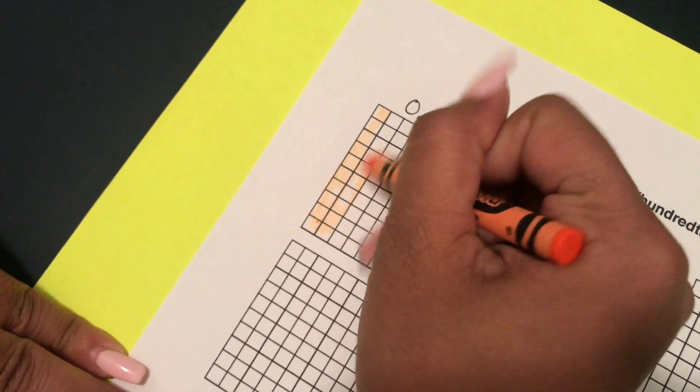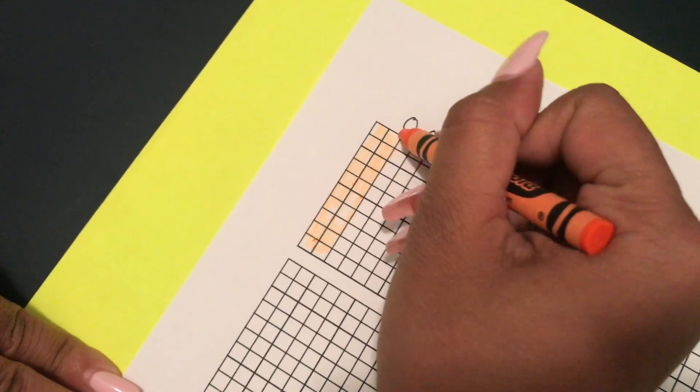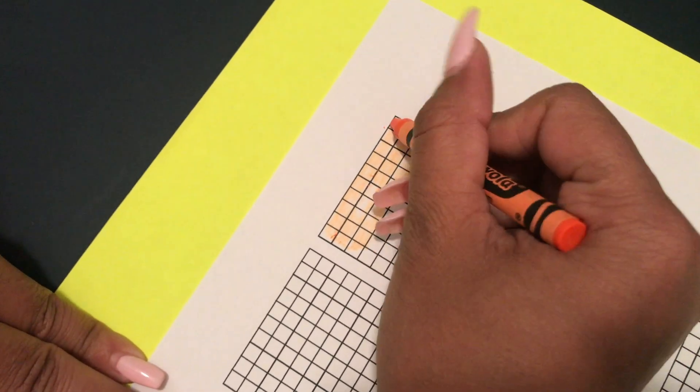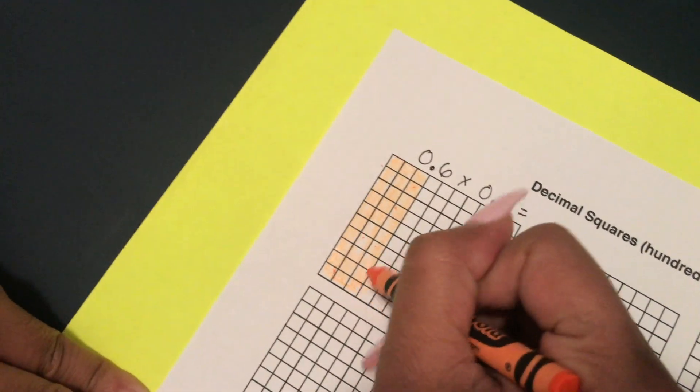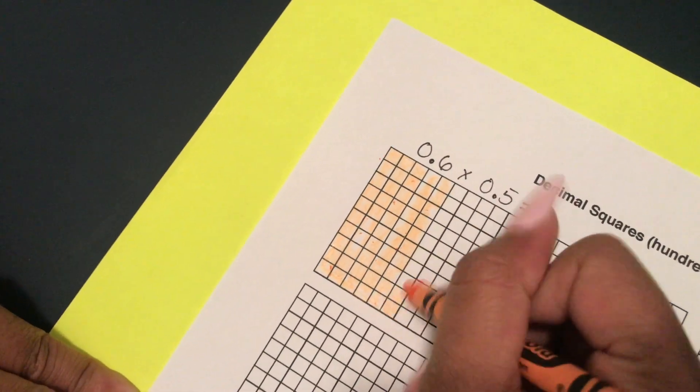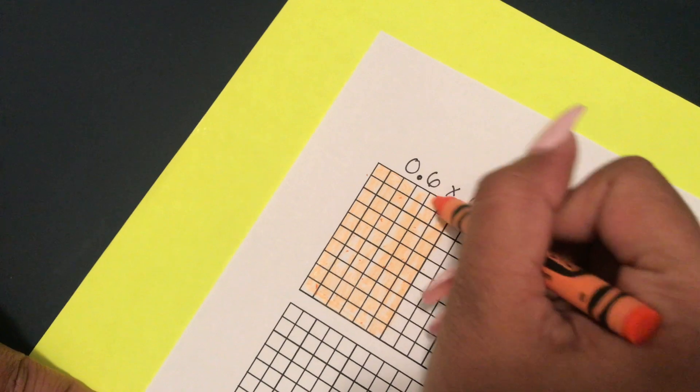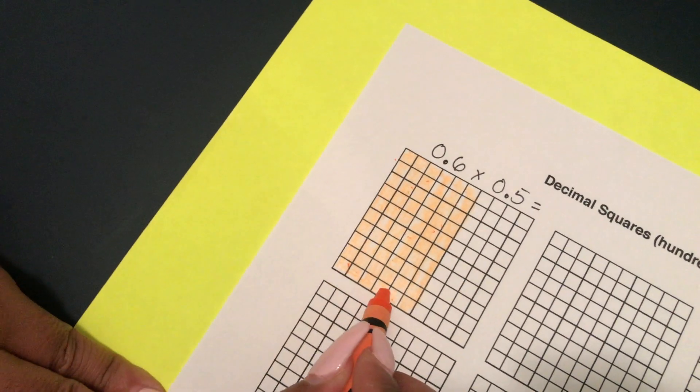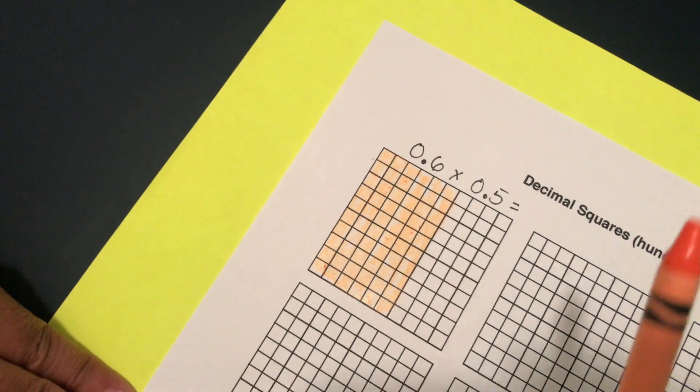So tenths are if you shade in a whole column or a whole row which is 10 of them. So I'm going to shade in six tenths which is equivalent to 60. So 60 of these are going to be shaded. So let me just show you. There's one tenths, two tenths. I'm not the best color but I did pass kindergarten so that's all that's important. Four tenths, five tenths, and six tenths.